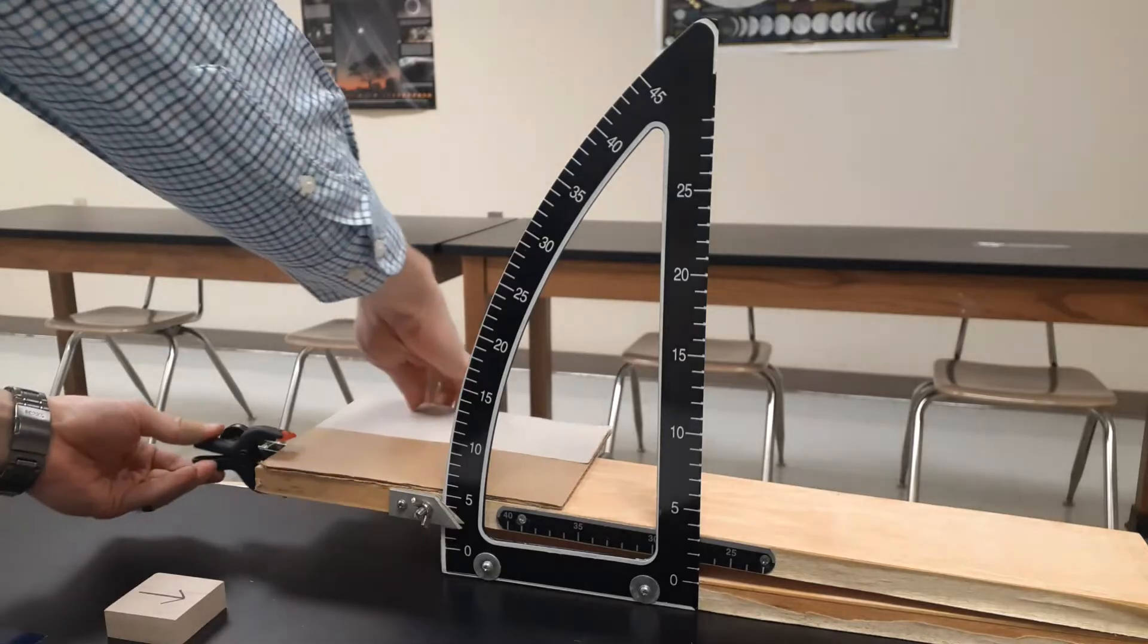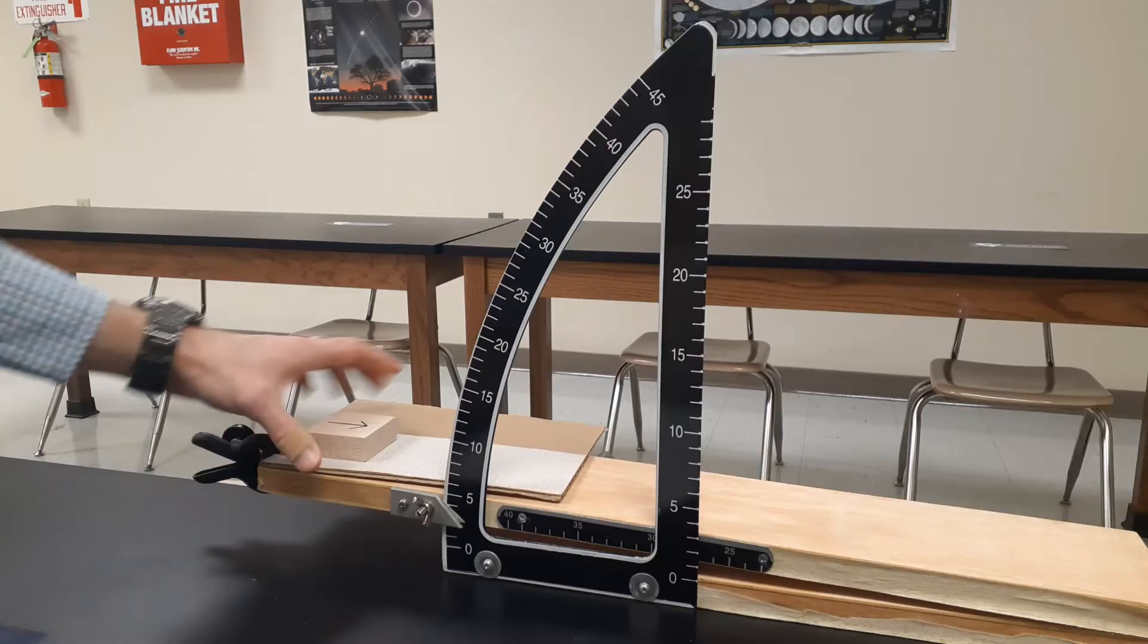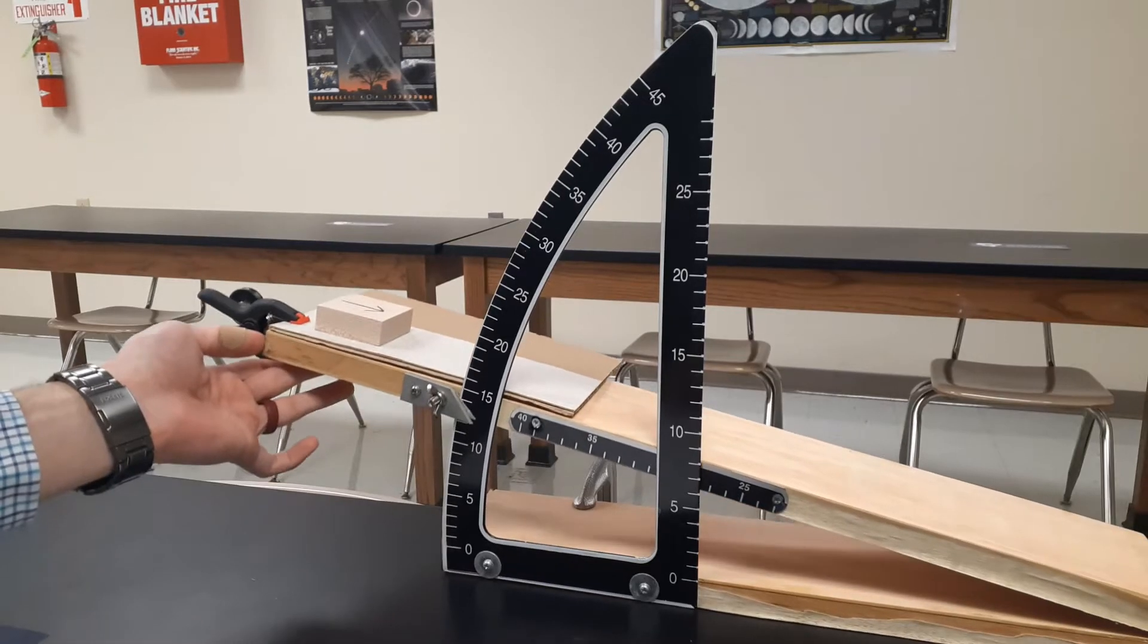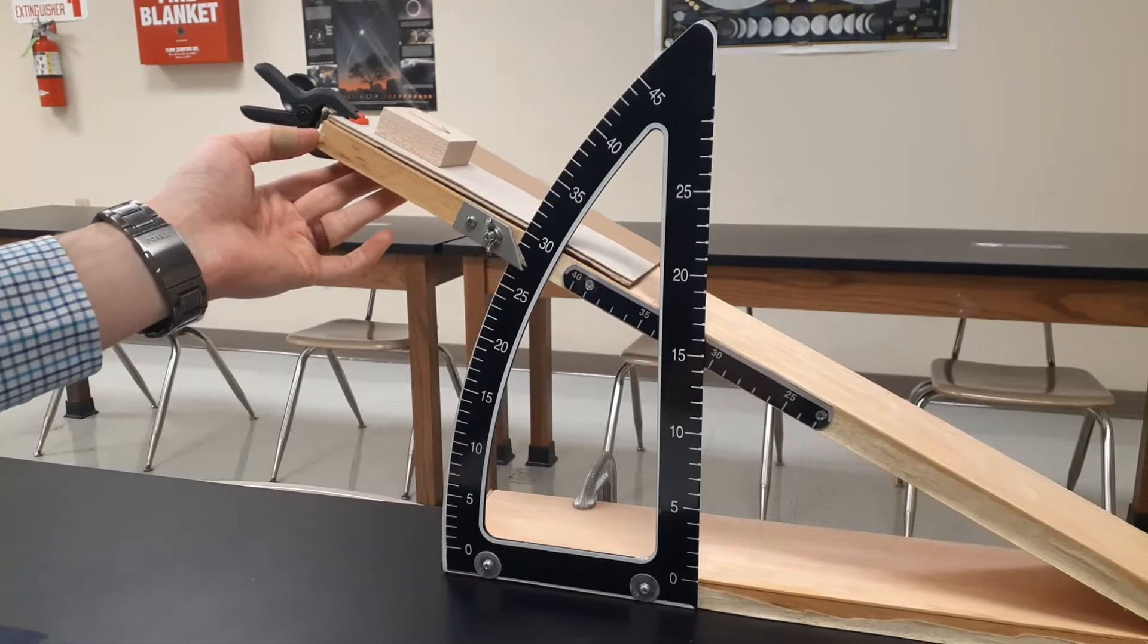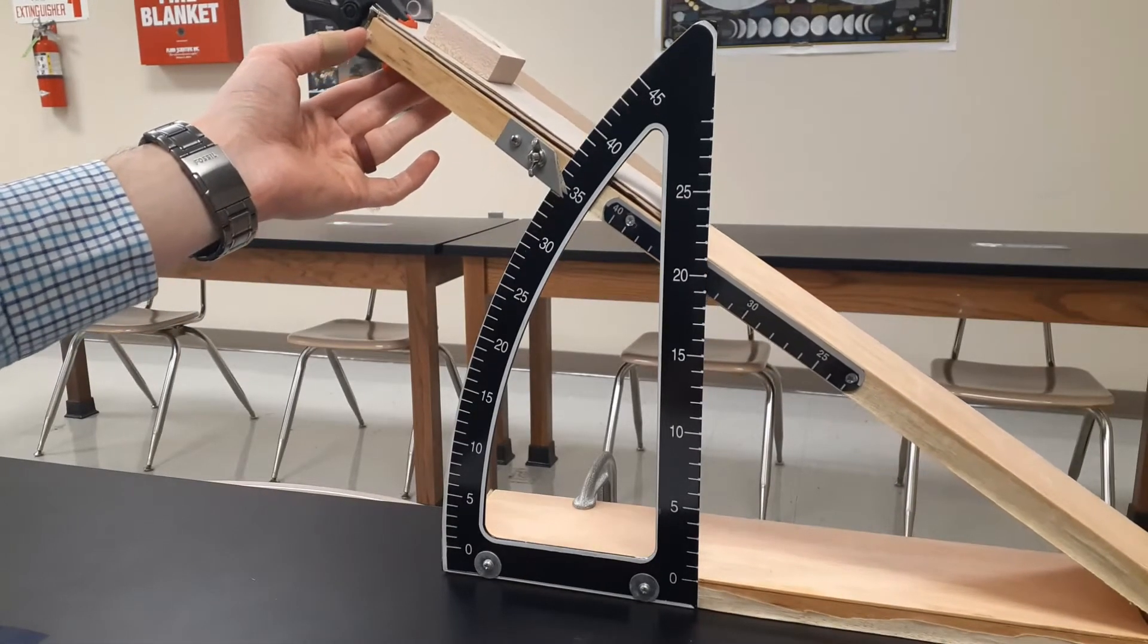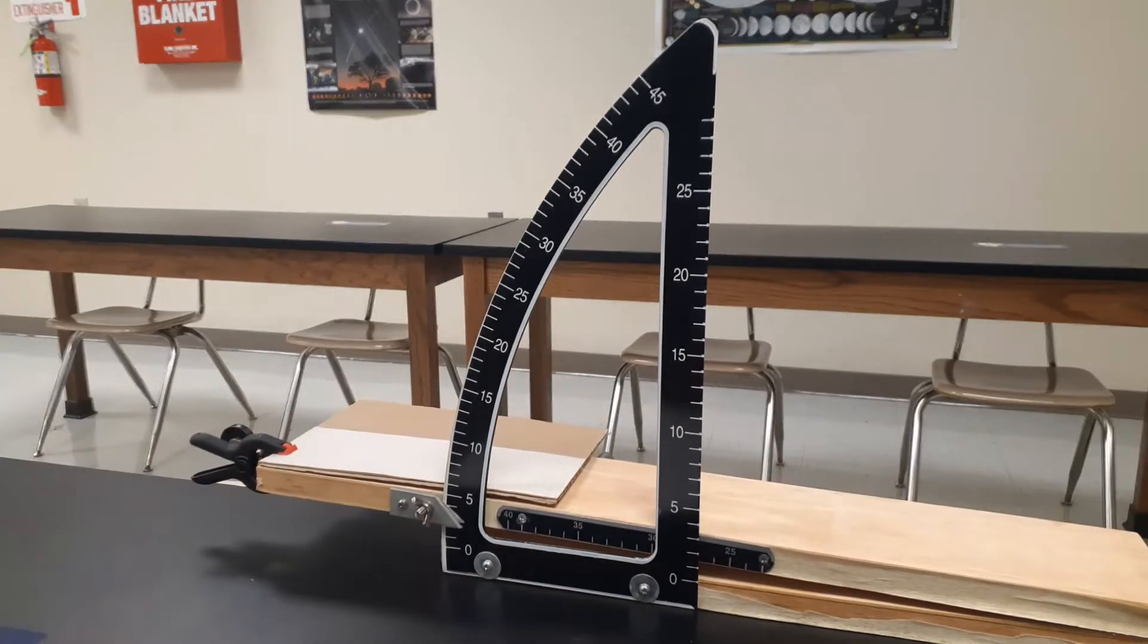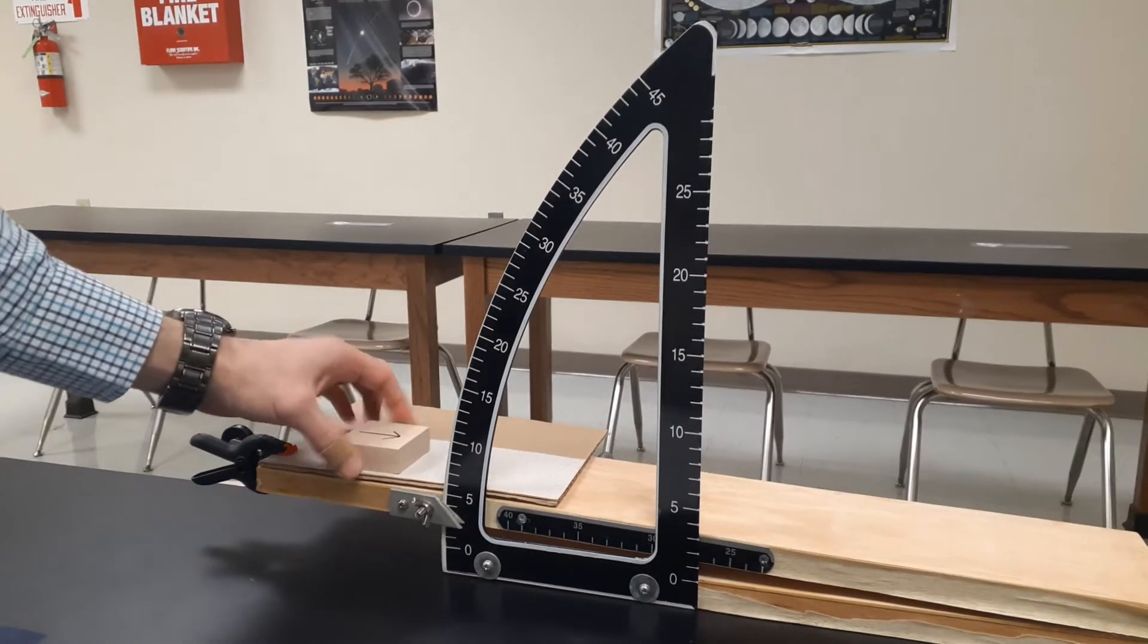Now I'm going to switch over to the sandpaper side. We're going to do the same type of thing. Trial one, working on sandpaper, just gently working my way up here. Now the sandpaper, of course, is a rougher surface than that cardboard, so it should have a larger amount of friction. And that was at 38 degrees for sandpaper trial number one.